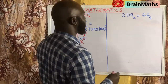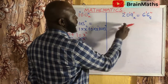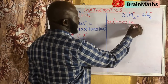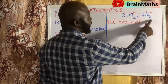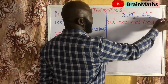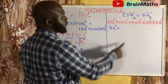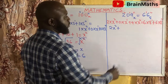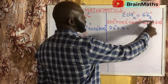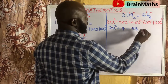Now let's quickly solve the second one. We have 204 in base X and 66 in base 8. Expanding: 2 times X raised to power 2, plus 0 times X raised to power 1, plus 4 times X raised to power 0, equals 6 times 8 raised to power 1, plus 6 times 8 raised to power 0. That gives 2X squared plus 0 plus 4, equals 48 plus 6.